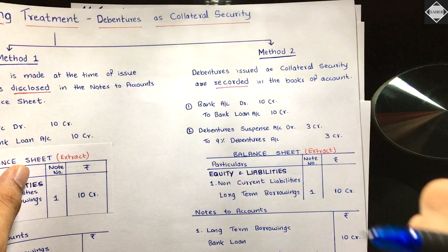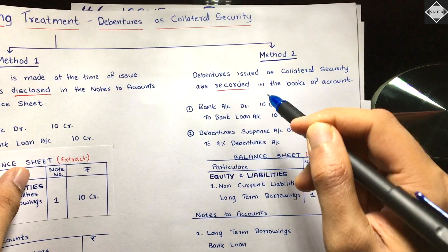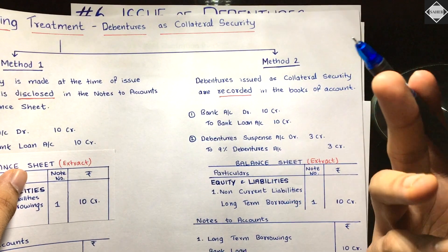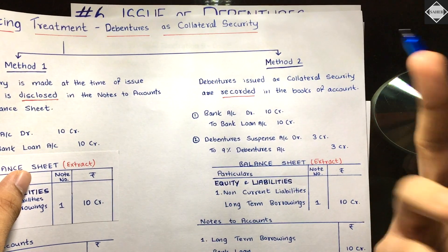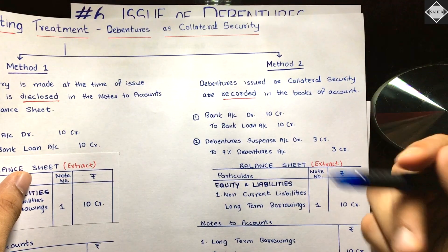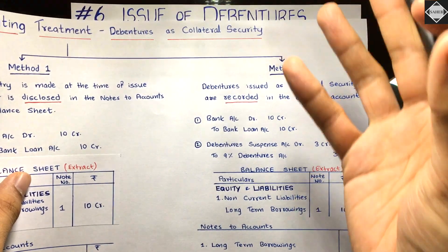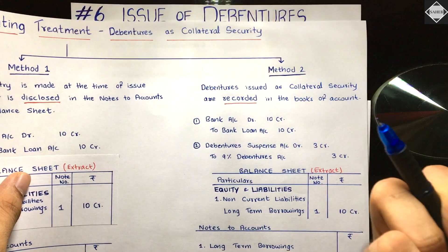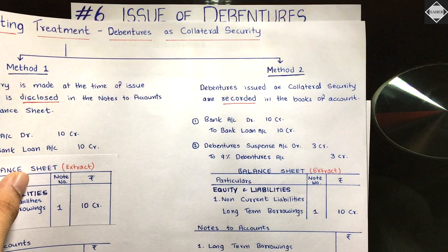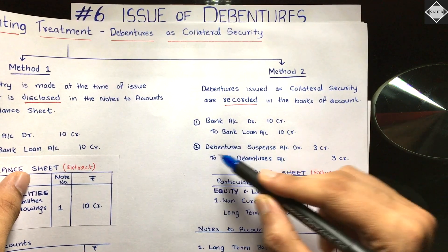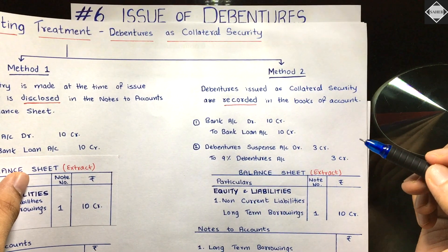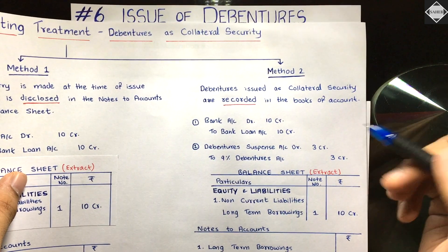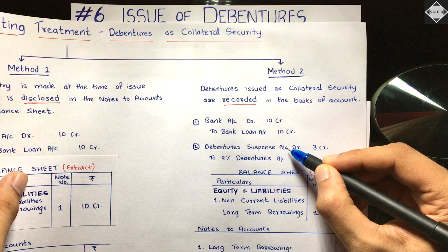When debentures issued as collateral security are recorded, you credit the debentures. But what would be the debit? There's no logical explanation — we are not getting any money, we are just handing over the debentures to the bank. We can't debit the bank account either, as that would imply we received money. So we debit a dummy virtual account called the Debenture Suspense Account to complete the double entry.